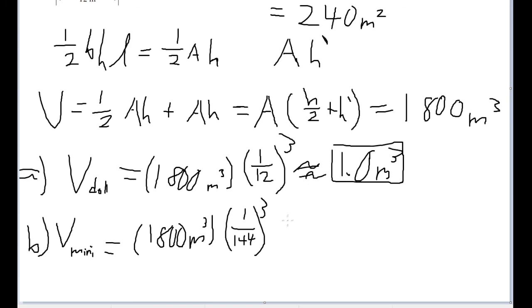Because we're working in three dimensions here, this gets us a volume for the miniature house of about 6.0 times 10 to the negative 4th power cubic meters. And that is about the volume of a miniature house.